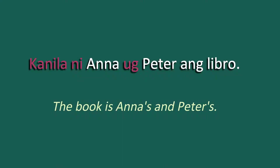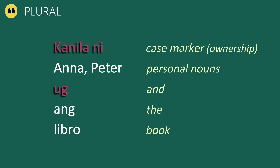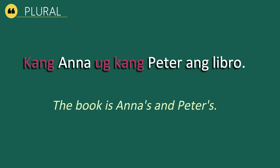Now let's look at the plural form. Our example is: Kanila ni Ana og Peter ang libro, which means 'The book is Anna's and Peter's.' Kanila ni is our case marker of ownership, og functions as 'and,' ang means 'the,' and libro is book. We can also say Kang Ana og kang Peter ang libro, which also means the book is Anna's and Peter's.